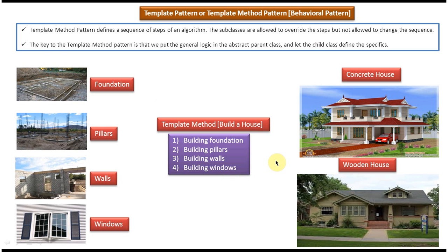Now if you read this explanation, you will understand very clearly. Template method pattern defines a sequence of steps of an algorithm. This template method defines a sequence of procedures we have to follow in order to build a house.